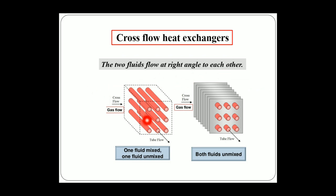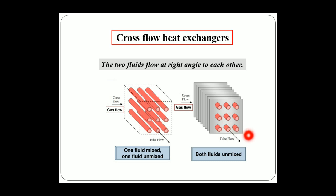The third type based on flow arrangement is cross flow heat exchangers, where the fluids flow at right angles to each other. In one example, a fluid flows inside tubes (unmixed), while gas flows around the tube surfaces without a partition, making it mixed. In another example, both the tube fluid and the gas are unmixed, with an arrangement preventing mixing of the gas around different tube regions. Both figures illustrate cross flow heat exchangers where the two fluids flow at 90 degrees to each other.